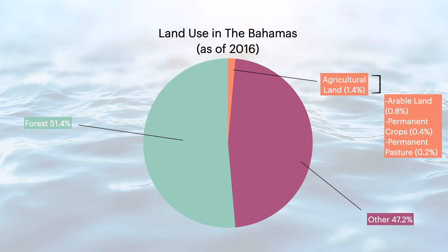Permanent pastures are considered land use for at least five years or more, and this land can be cultivated or natural. Forests are considered land that spans more than half a hectare — also about an acre — with trees higher than five meters, which is about 16 feet, and a canopy cover of more than 10%. There are three types of forests in the Bahamas: coppice forests, pine forests, and mangrove forests. Other land use is classified as developed areas, roads, and other transportation features, as well as barren land with less than a third vegetated, or wasteland.